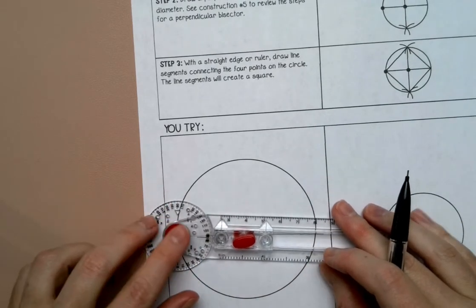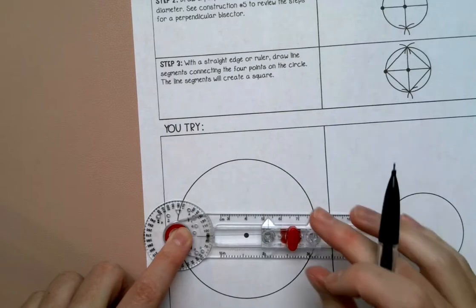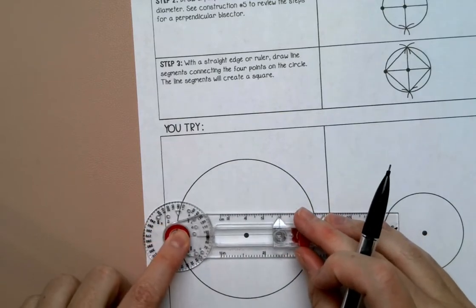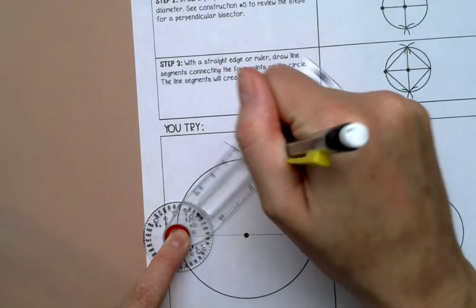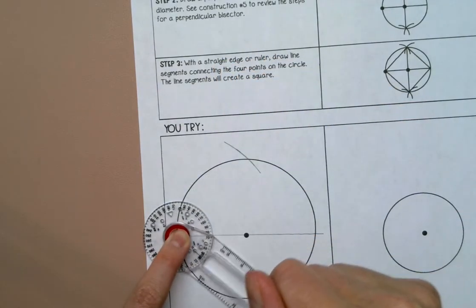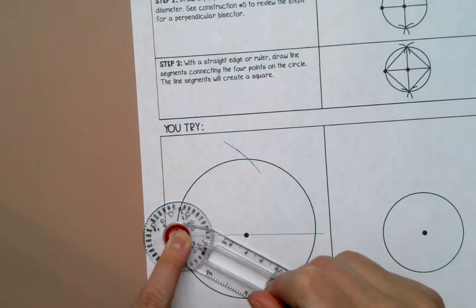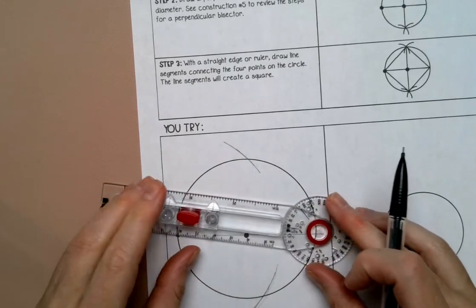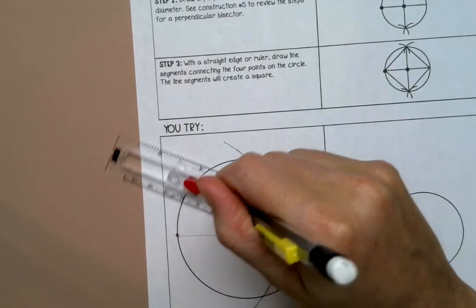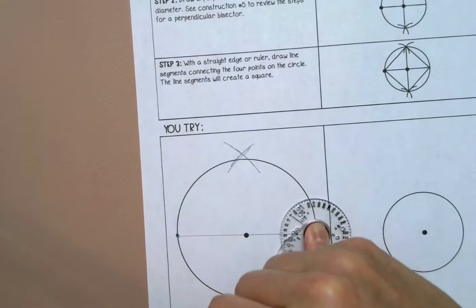All right, then I'm going to make a perpendicular bisector. So I'm going to go about three fourths of the way on my diameter and I'm going to go up and down. You want to make sure the arcs go through the circle. And then I'm going to go the other way, up and down.